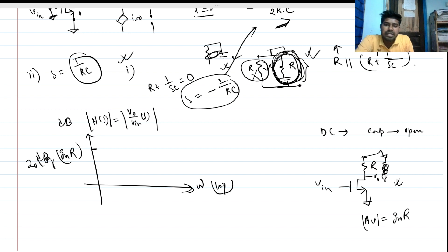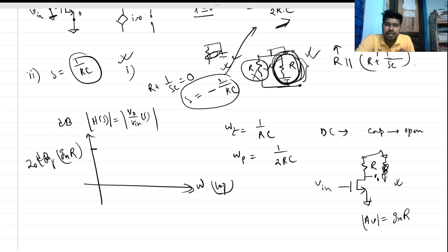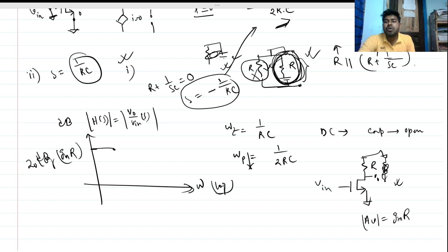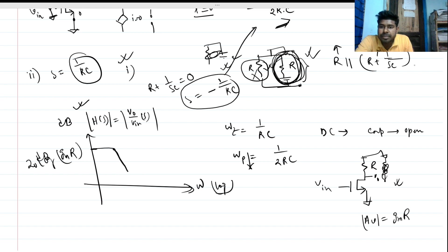We have a zero at omega_z equals 1 over RC and a pole at omega_p equals 1 over 2RC. Since omega_p is smaller, the pole occurs first — closer to the origin. The Bode magnitude plot decreases at minus 20 dB per decade starting at the pole frequency omega_p.